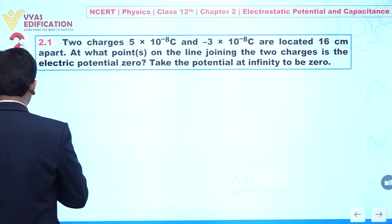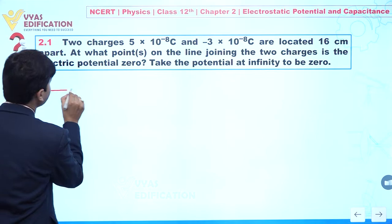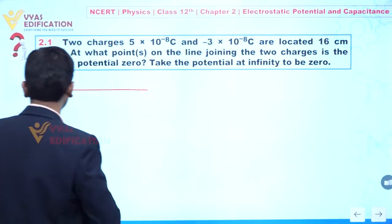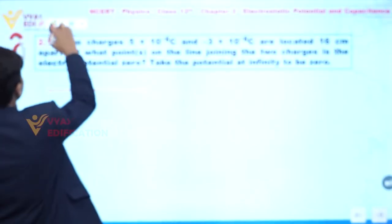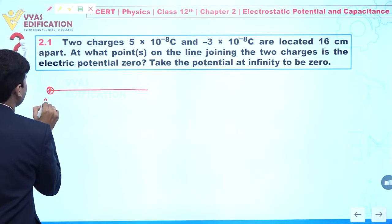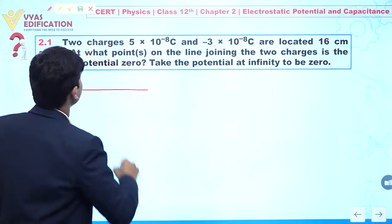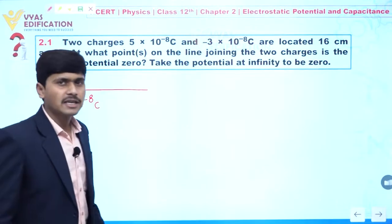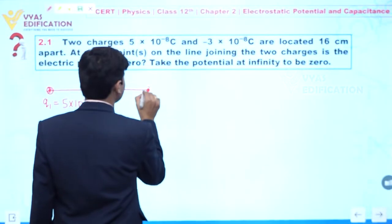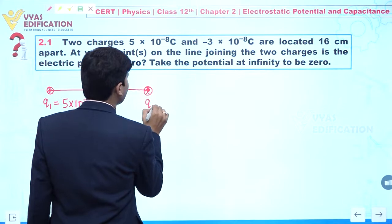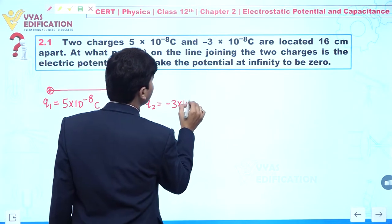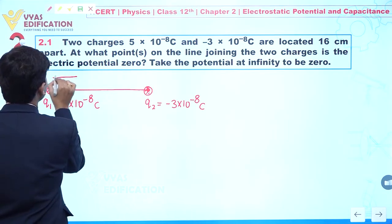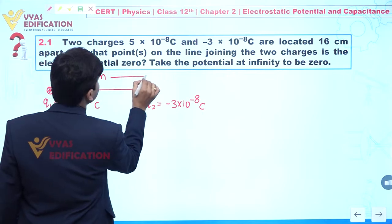Let us suppose I am taking a line joining the centers of these two charges. The first charge Q1 is placed at one point with value 5 × 10⁻⁸ coulomb, and the second charge Q2 has value −3 × 10⁻⁸ coulomb. The distance between them is 16 centimeters.